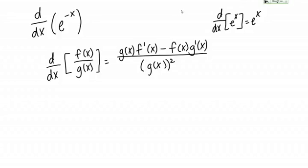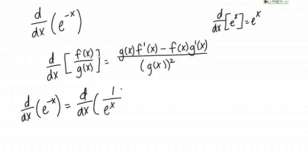Remember that a negative exponent can be made positive if you move it to the denominator. In other words, the derivative of e to the negative x, I can write that as the derivative of 1 over e to the x using exponent rules. These are really useful rules to remember and be able to use.